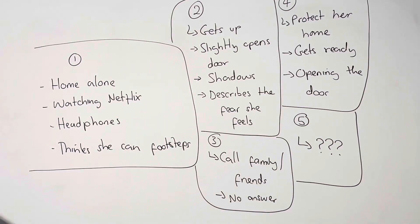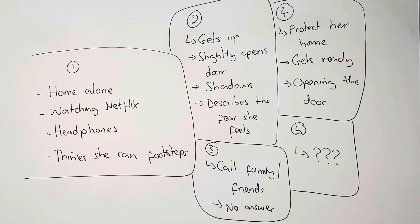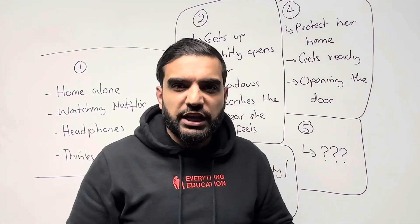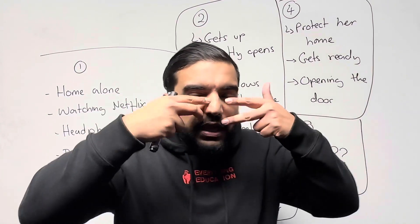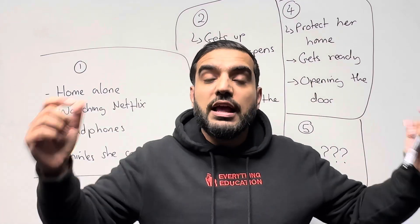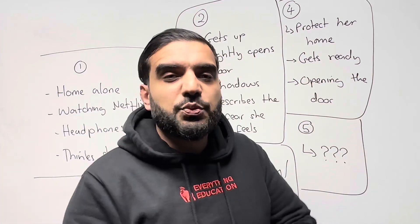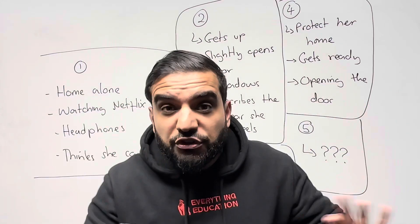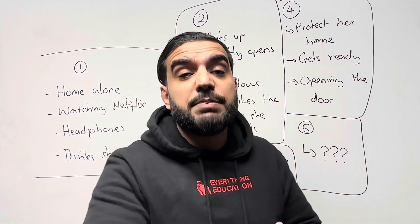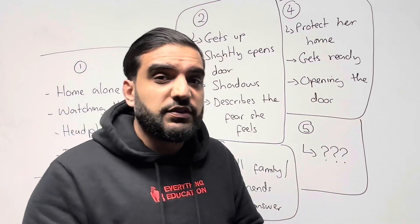Paragraph five is left open-ended depending on how you want to end it. Conventionally: she opens the door, hairdryer and pen knife ready, camouflage marks on her face — and the lights come on. It's her surprise birthday party! That's why nobody was answering the phone, that's why her parents went to voicemail — they were getting the party ready. That's one ending, but there are many other endings depending on the question you were given.